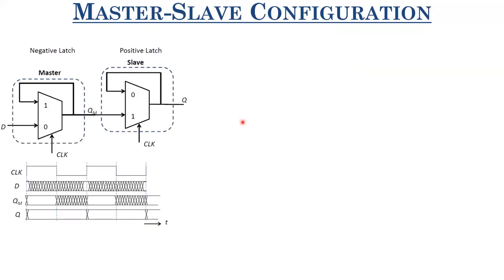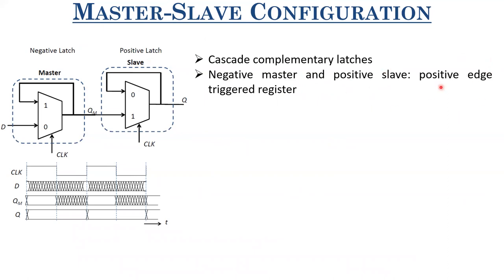Now let me talk about the master-slave configuration for realizing a register. To realize a positive edge-triggered register, you cascade a negative master latch with a positive slave latch. Here we have a negative latch as the master, cascaded with a positive latch as the slave. The output of the master latch, Qm, is fed as the input of the positive slave latch. The final output Q is the output of the overall register, driven by one clock, with D as input and Q as output.